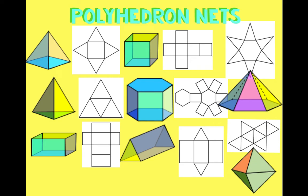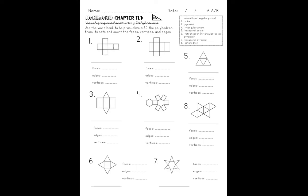You guys are going to get used to it. It's a lot of '-hedrons' and big words, but as long as you're practicing, I promise you guys will have this memorized. So your homework today is to use your notes and write down the name of each of these nets — that's number one. And then number two, you're going to count how many faces, edges, and vertices each shape has.